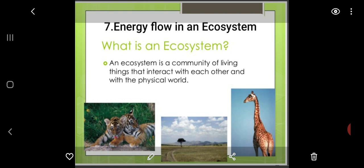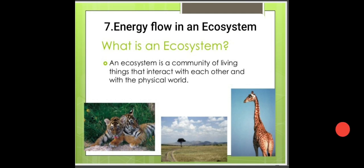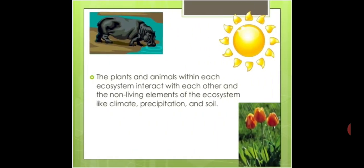First we will understand what is an ecosystem. An ecosystem is a community of living things that interact with each other and with the physical world. Whatever we see in our environment, whether it's living beings or non-living beings, all together contribute to our ecosystem. The plants and animals within each ecosystem interact with each other and the non-living elements like climate, precipitation, and soil.